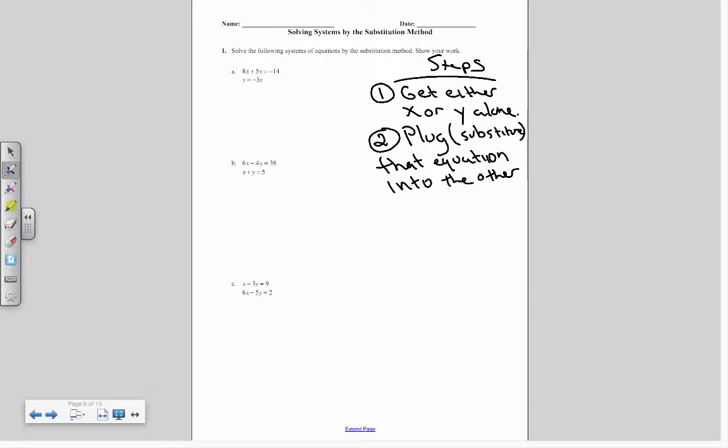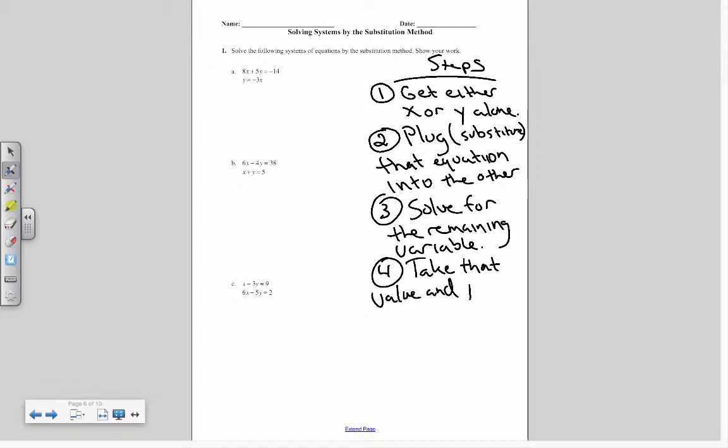The second step is to plug or substitute that equation into the other. So what we're going to do is solve one for either x or y, and then take whatever it's equal to and put it into the other equation. The third step is to solve for the remaining variable. So we'll be left with either x equals 2 or y equals 4 or something like that. And then the last step is to take that value and plug it in to solve for the secondary.